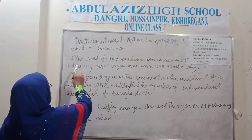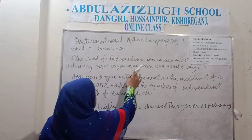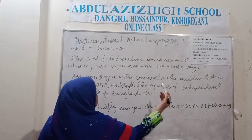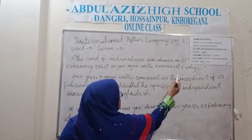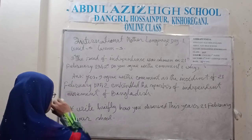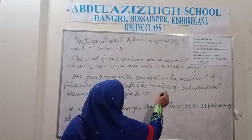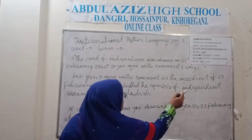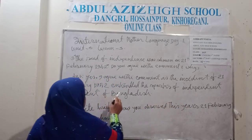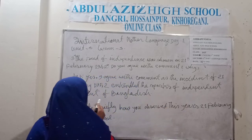Question number three: The seed of independence was sown on 21st February 1952 — do you agree with the comment? Why? Answer: Yes, I agree with the comment, as the incident of 21st February 1952 kindled the sparks of the independence movement of Bangladesh.